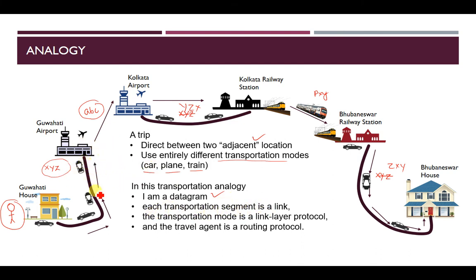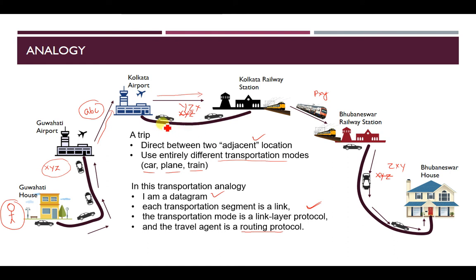Each transportation segment is a link. The transportation mode is a link layer protocol — car mode is one protocol, airplane mode is another, train mode is another. These modes are the protocols. The travel agent is the routing protocol — he manages all the traveling paths. From this analogy it is clear that the role of the data link layer is responsibility from point to point, between adjacent locations.